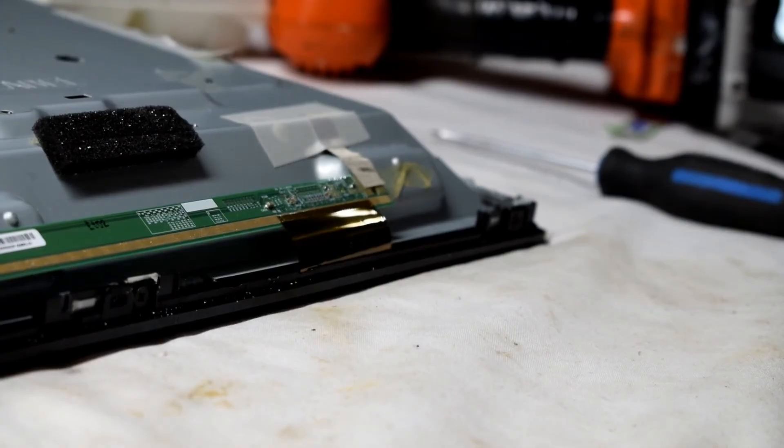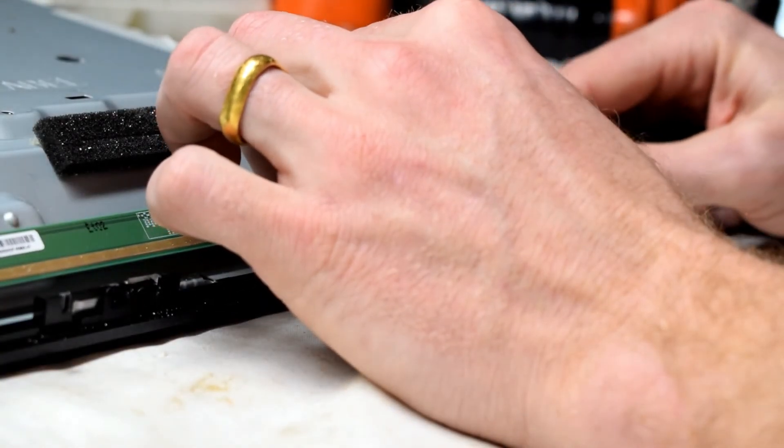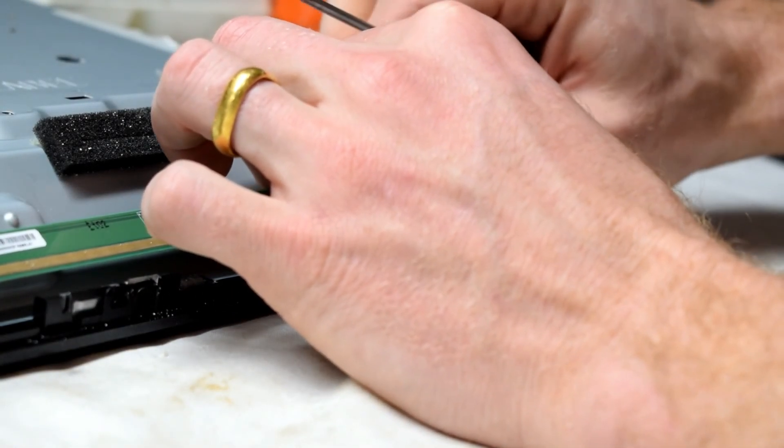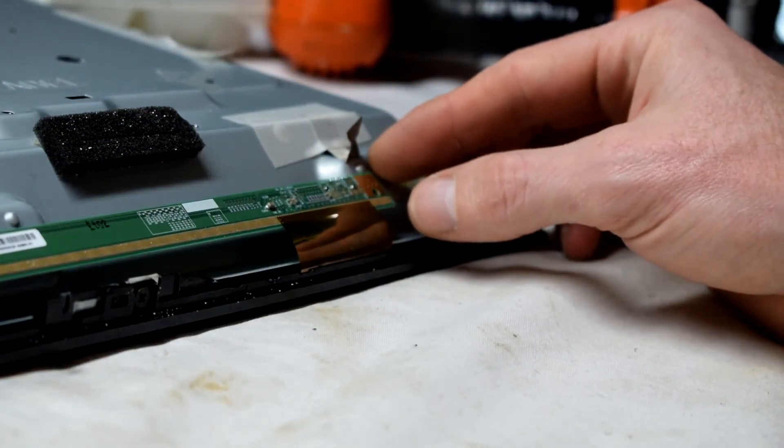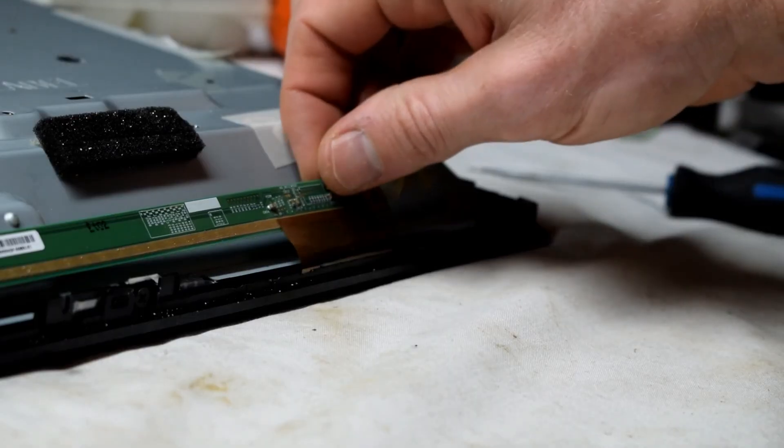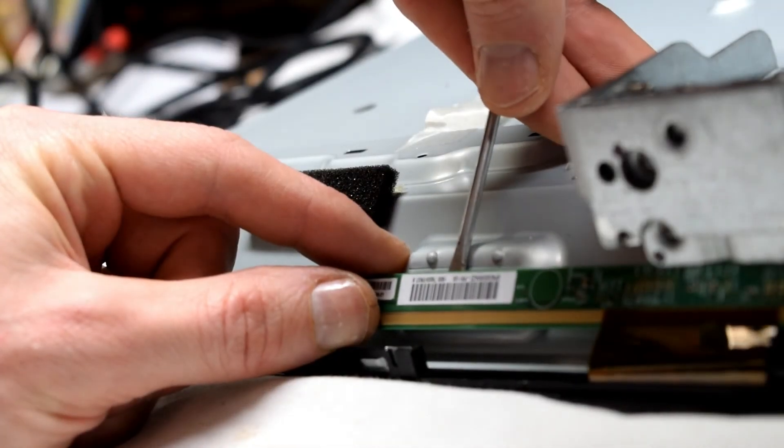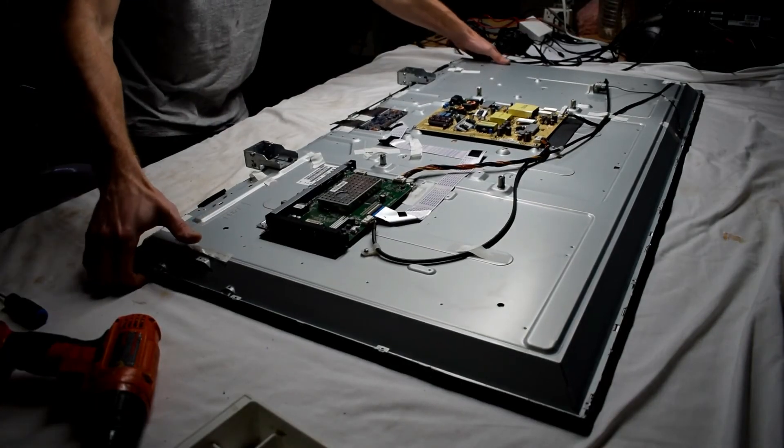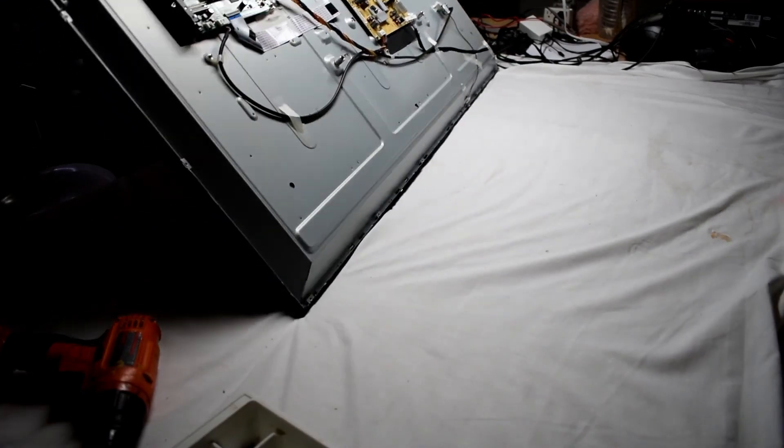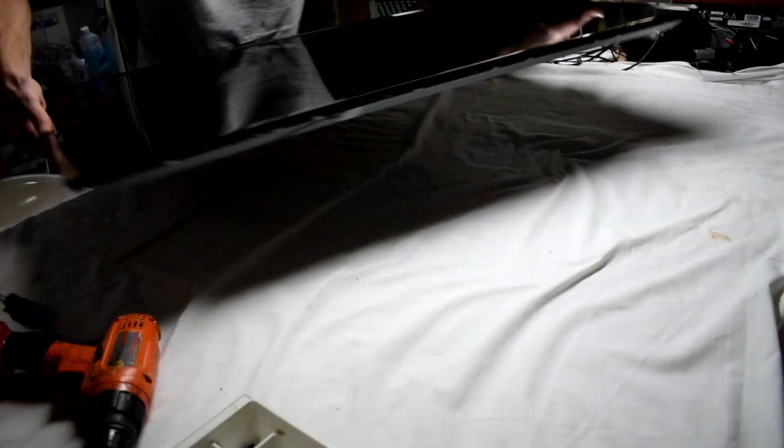We want to loosen the bottom ribbon cables that connect to the TV screen. I'm just using a screwdriver, there may be a little bit of glue. After you have that loosened, flip the TV over.